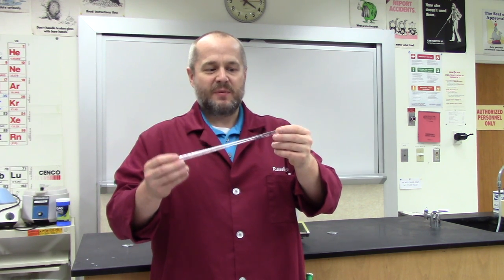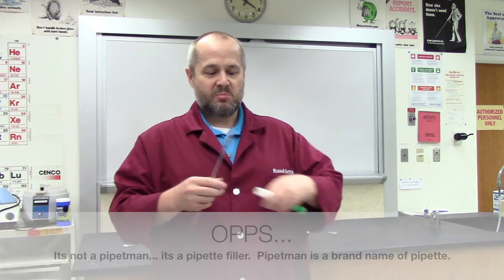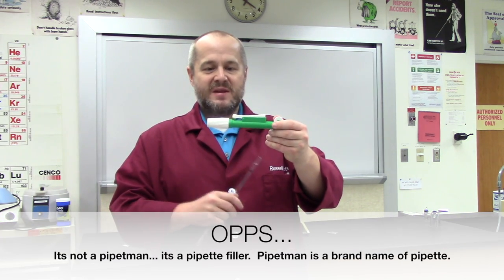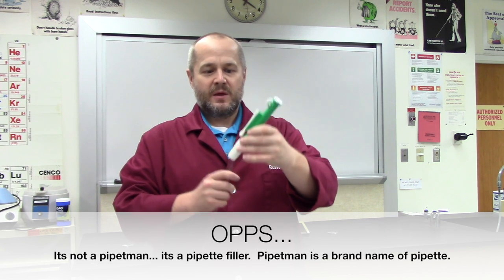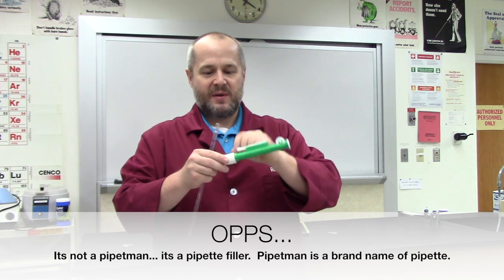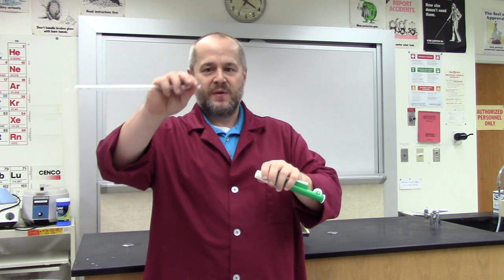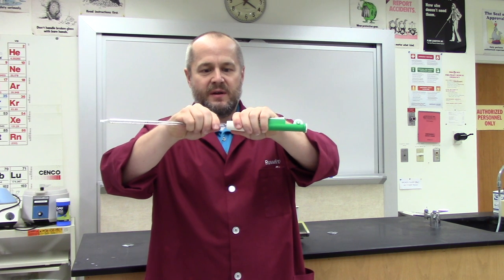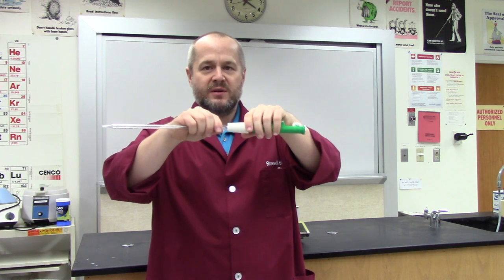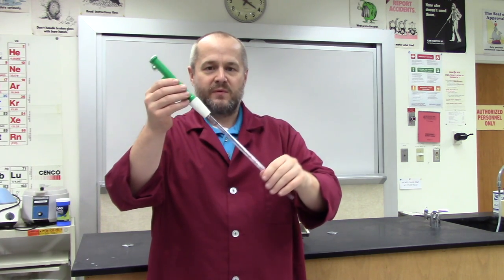Now, in the old days, people used to actually use these like a straw. We don't do that anymore for obvious safety reasons. So we will be using what is known as a pipetment. A pipetment is simply a device that is used to suck up the liquid into the pipette. To attach the pipette to the pipetment, put your fingers as close to the end of the pipetment as you can. Put your thumb and forefinger as close as you can to the edge of the pipette. And simply push them together.